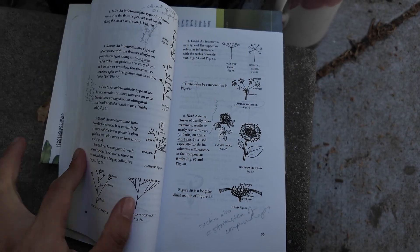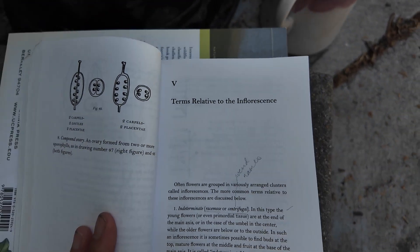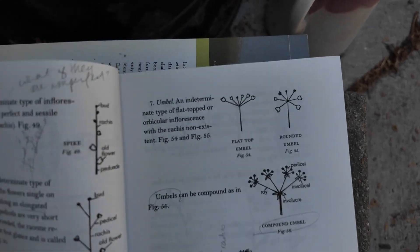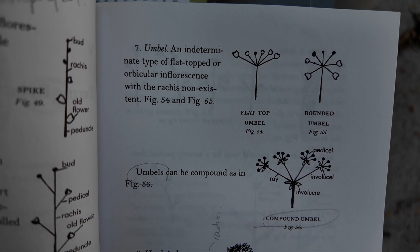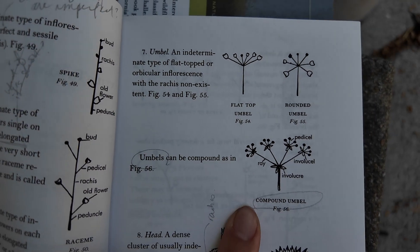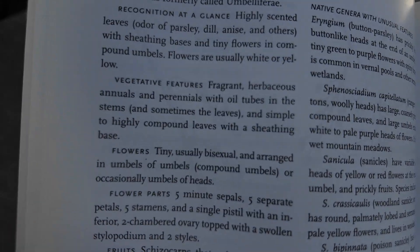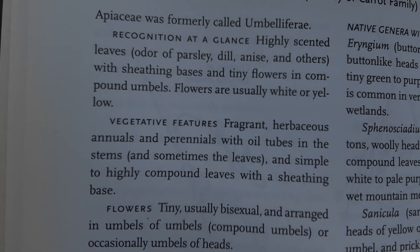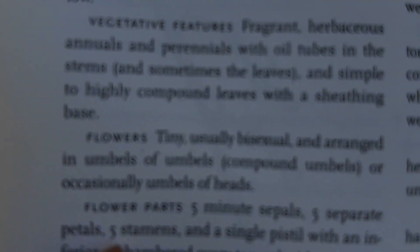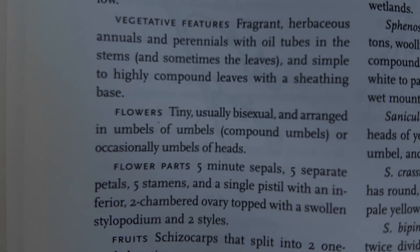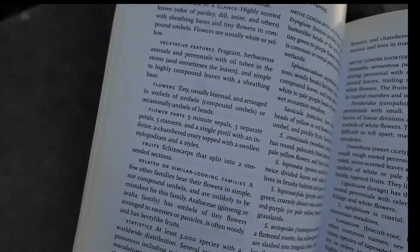Reference a book like this. You can start flipping through the section relating to flowers or inflorescences. I already knew it was an umbel, and you can also have a compound umbel, which is what we had. For this plant family — the parsley family — the flowers are described as being arranged in umbels of umbels: compound umbels.